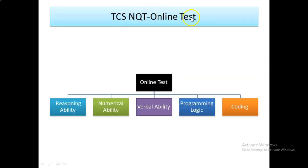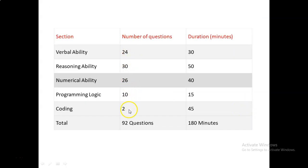TCS online test consists of various sections: five sections in it - reasoning ability, numerical ability, verbal ability, programming logic and coding. Discussing how many number of questions are given for each section and what is the time duration.